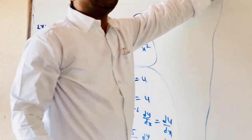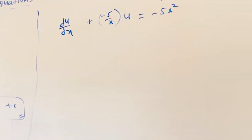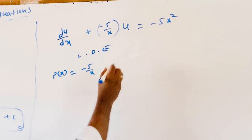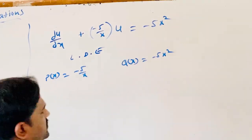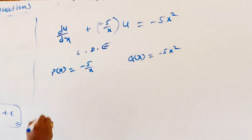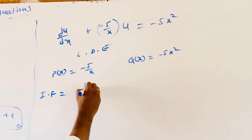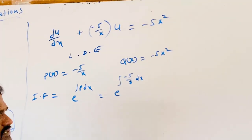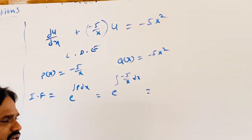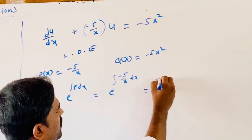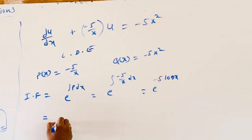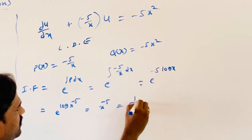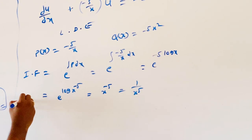The equation in terms of u is now a linear differential equation, where P(x) = −5/x and Q(x) = −5x². It is in terms of u and x. The integrating factor is e^(∫P dx) = e^(∫−5/x dx). That equals e^(−5·ln x) = e^(ln x^(−5)) = x^(−5), which is 1/x⁵.